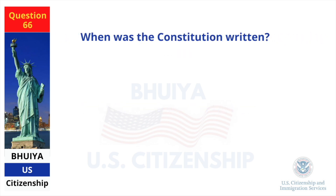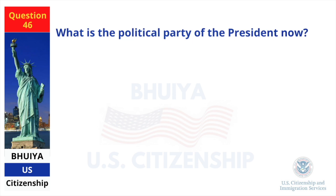When was the Constitution written? 1787. What is the political party of the President now? Democratic Party.